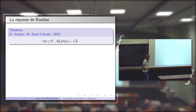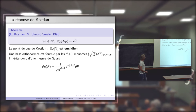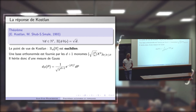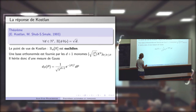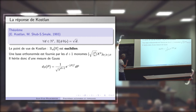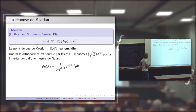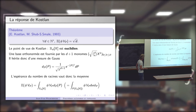Dans le cas de Kostlan, son produit scalaire a la propriété que les monômes restent orthogonaux, mais ils ne sont plus de norme 1 : il y a un coefficient binomial devant. À partir du moment où cet espace est euclidien, vous avez une mesure de Gauss associée, une mesure de probabilité. Et l'espérance du nombre de racines vaut √d pour cette nouvelle mesure.